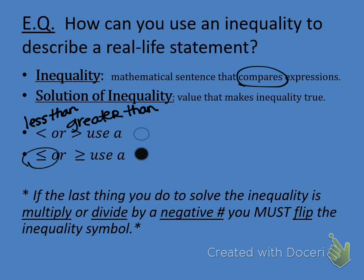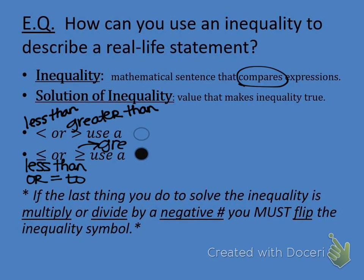This is my less than or equal to. That line underneath the symbol means or equal to. And this one — Shonda? — this is my greater than or equal to. Very good. Understanding that the line underneath just means or equal to. When we're graphing inequalities and our symbol is less than or equal to or greater than or equal to, we're going to color in our dot.